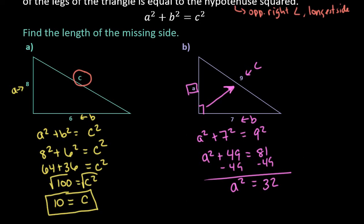32 is not a nice value as far as being a perfect square. So when I plug this into my calculator, I'm going to get a decimal approximation.